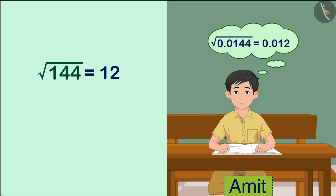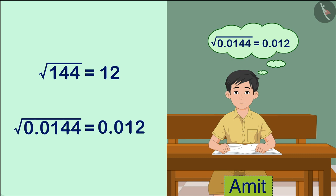We know that the square root of 144 is 12. Amit, while finding the square root of 0.0144, used 12 as the square root of 144 and thus added 0.0. This is a misconception.